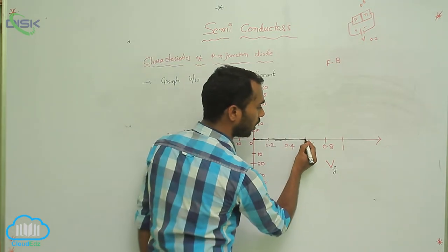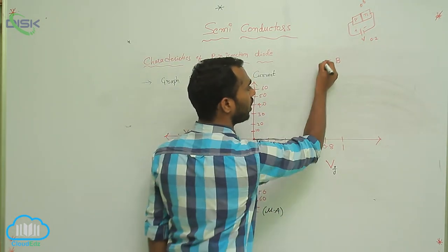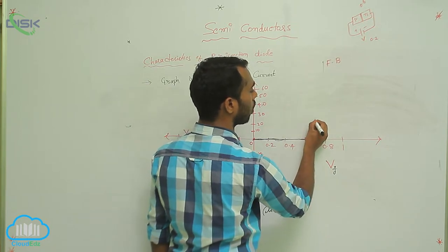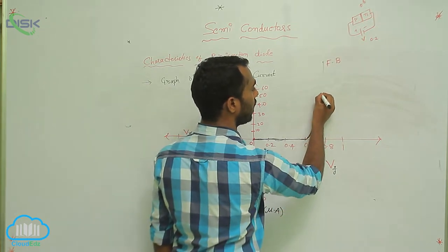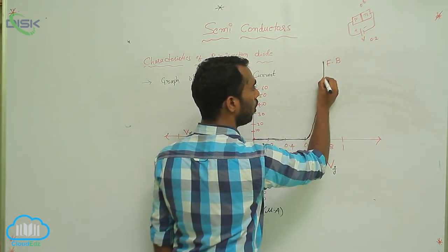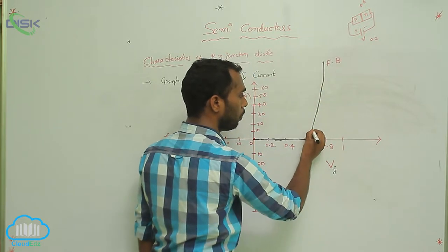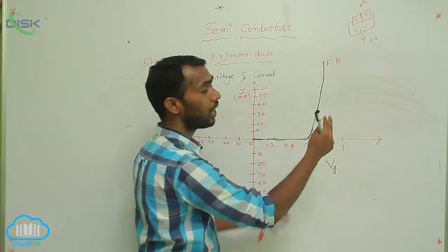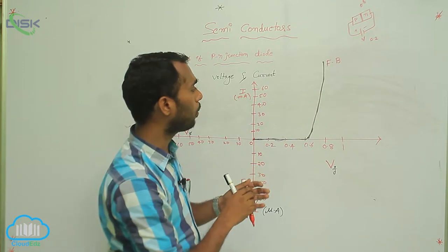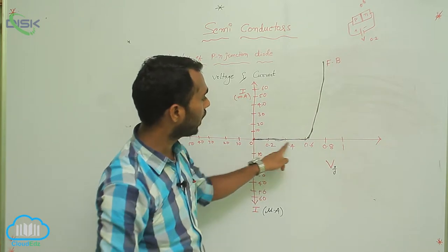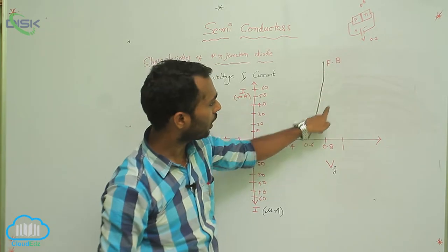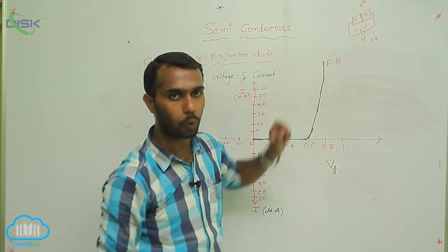After 0.6 volts, current increases like this — current increases rapidly. Why does current increase? Because the depletion layer width decreases. Depletion layer width decreases automatically, so current increases. Current is more.